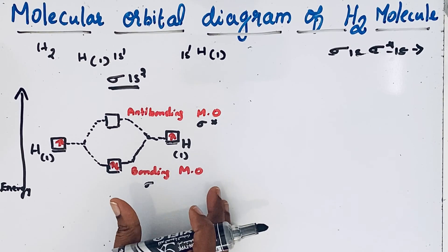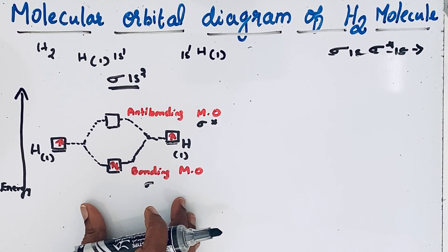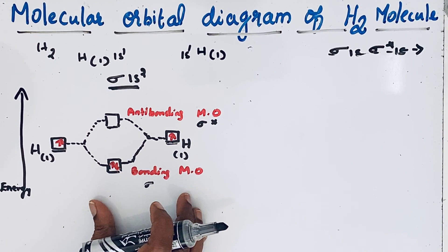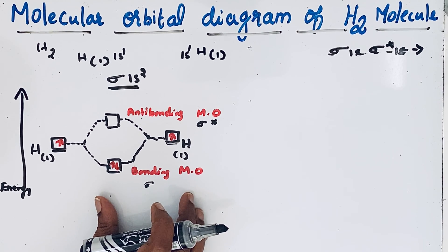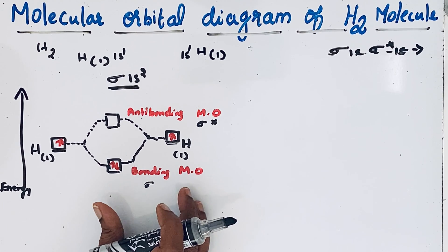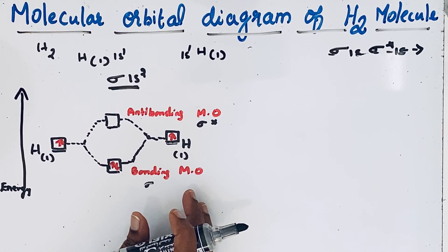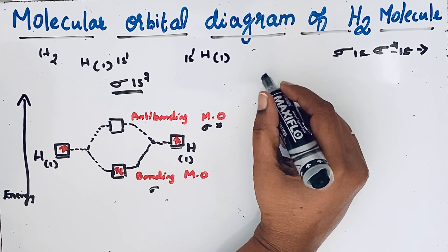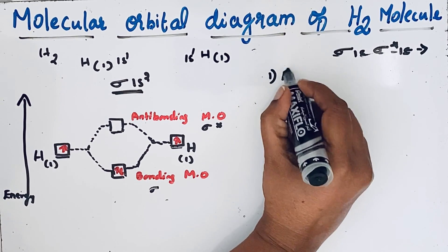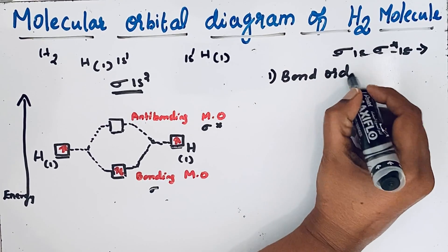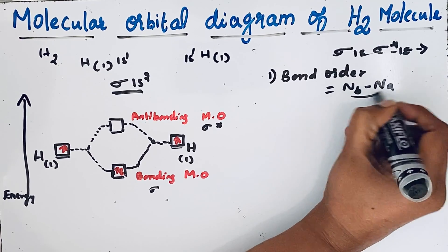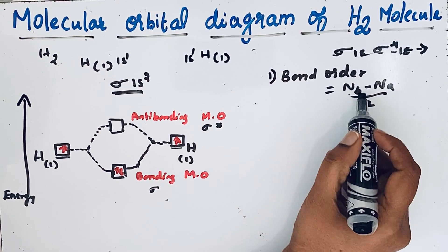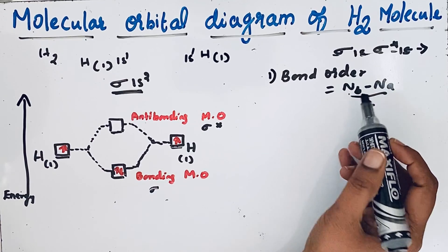This is the molecular orbital diagram for hydrogen molecule. From this we can find out the stability of the hydrogen molecule, the bond order, number of covalent bonds, and whether it is diamagnetic or paramagnetic. The bond order formula is: Nb minus Na divided by 2, where Nb is the number of bonding electrons and Na is the number of antibonding electrons.